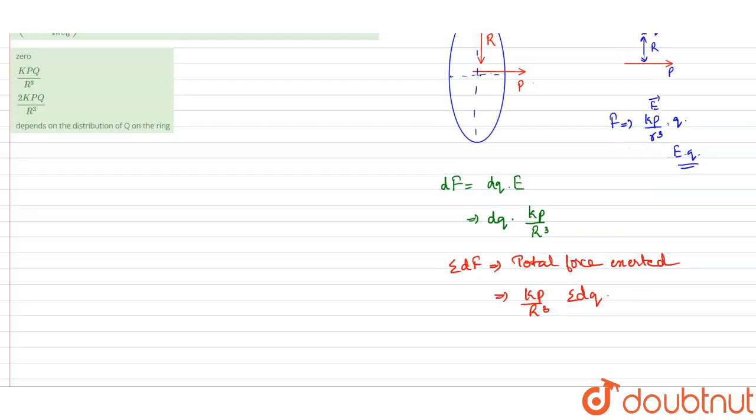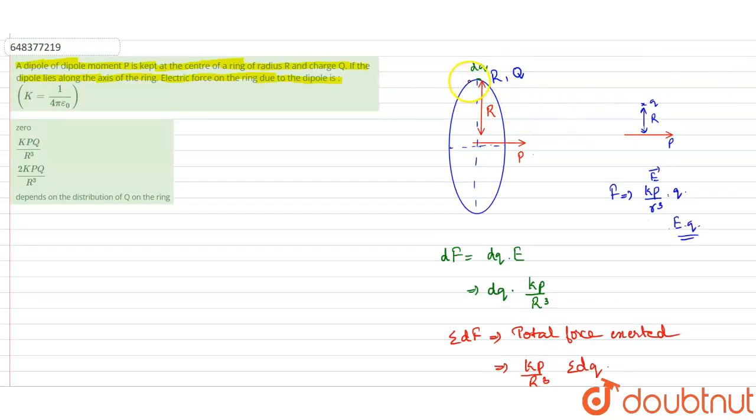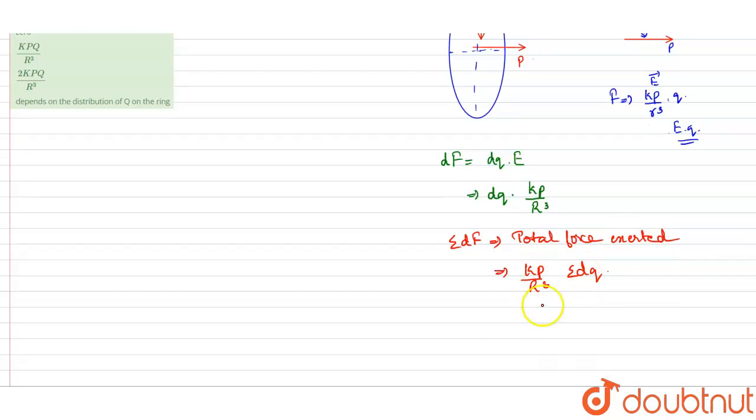For this we have to find kp by r cubed into summation dq. For the summation dq, the total charge is q. Even if it be uniformly or non-uniformly distributed, we don't care. The total charge on the ring will be q. So the summation dq will be q, so kp by r cubed into q.